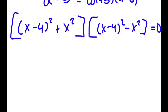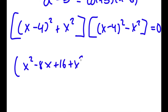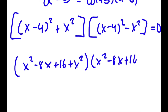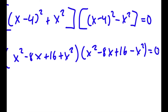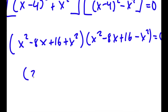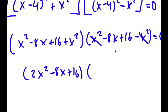If I expand this, I get x squared minus 8x plus 16 plus x squared times x squared minus 8x plus 16 minus x squared equals 0. So this gives me 2x squared minus 8x plus 16 times negative 8x plus 16 is equal to 0.